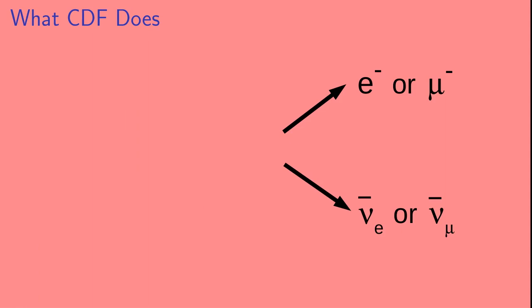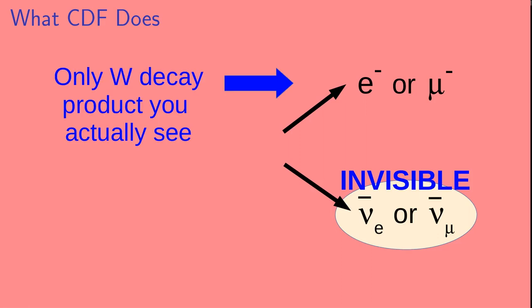So the W decays into an electron or muon and its associated anti-neutrino. The neutrinos interact extremely weakly with matter, and the detector is made of matter. For all practical purposes, the detector can't see them. They are effectively invisible. So the only W decay product you actually see is the electron or muon.